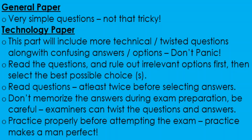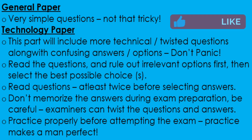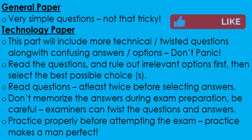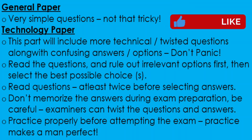There will be a general paper and a technology paper in the closed-book CSWIP examination. The general paper will include very basic definitions and terms — simple, non-tricky questions. The technology paper will be more complex, with technical and twisted questions along with confusing answer options. Don't panic; stay cool-minded. Read the questions with a relaxed mind and answer accordingly. It is suggested to rule out irrelevant options first, then select the best possible answer. Read each question at least twice before selecting an answer. Don't memorize answers during exam preparation, as examiners can twist questions and answers. Practice properly before attempting the exam — practice makes a man perfect.